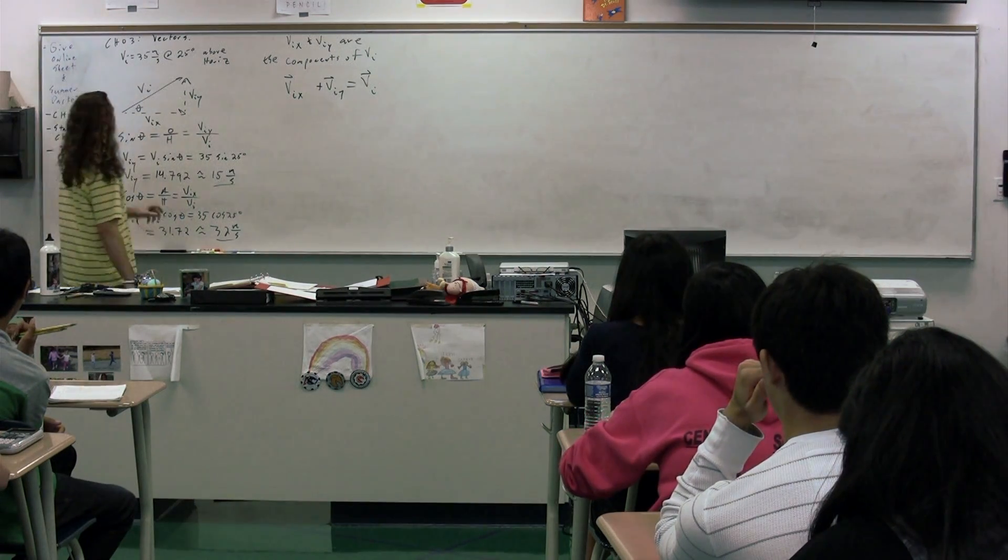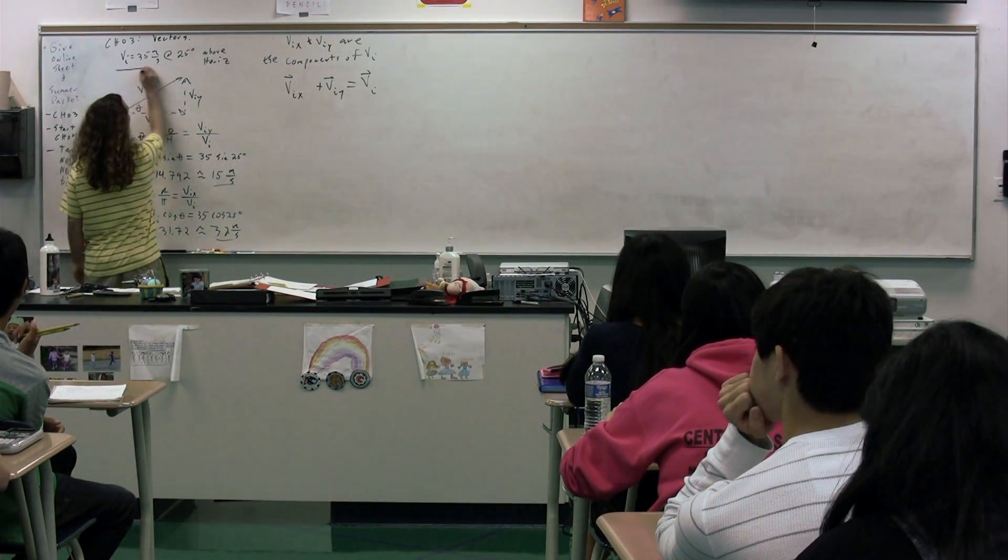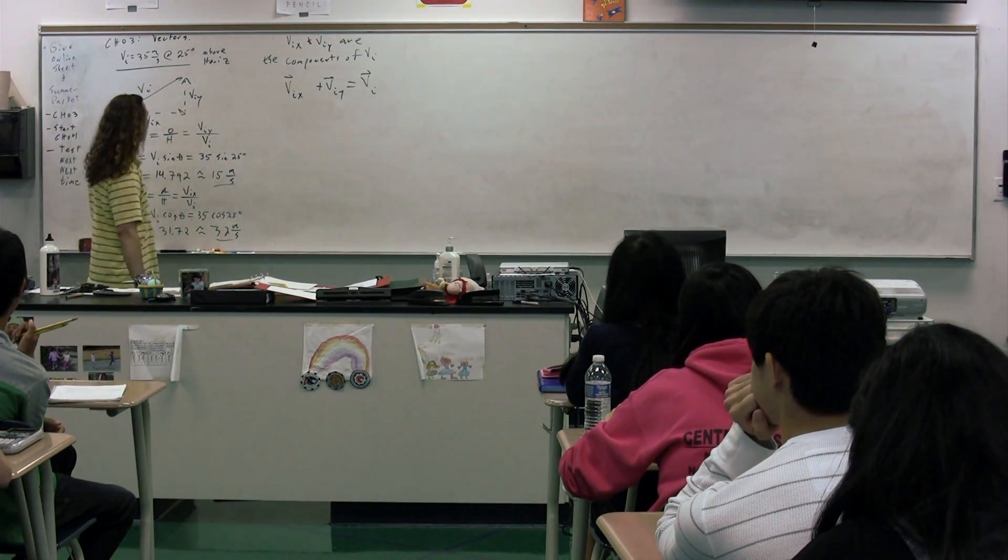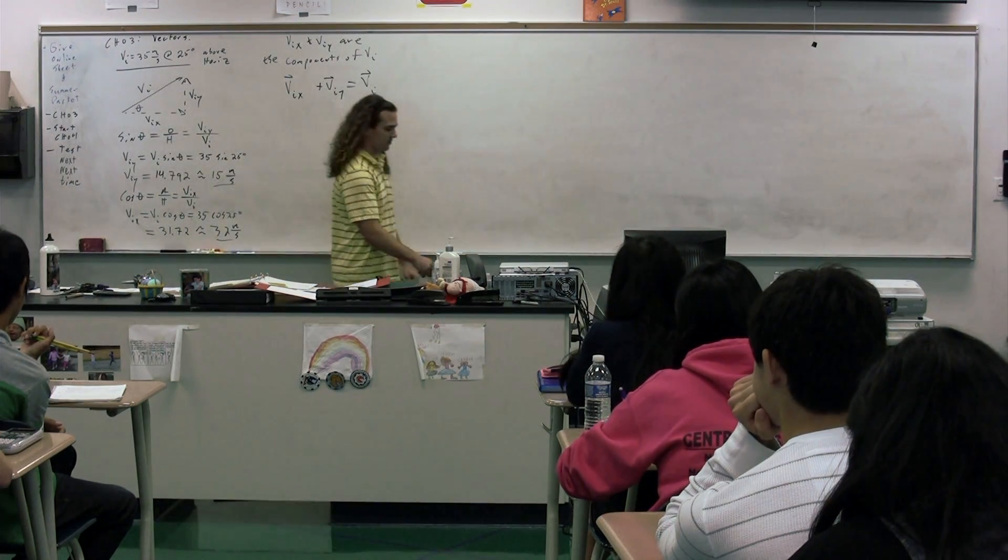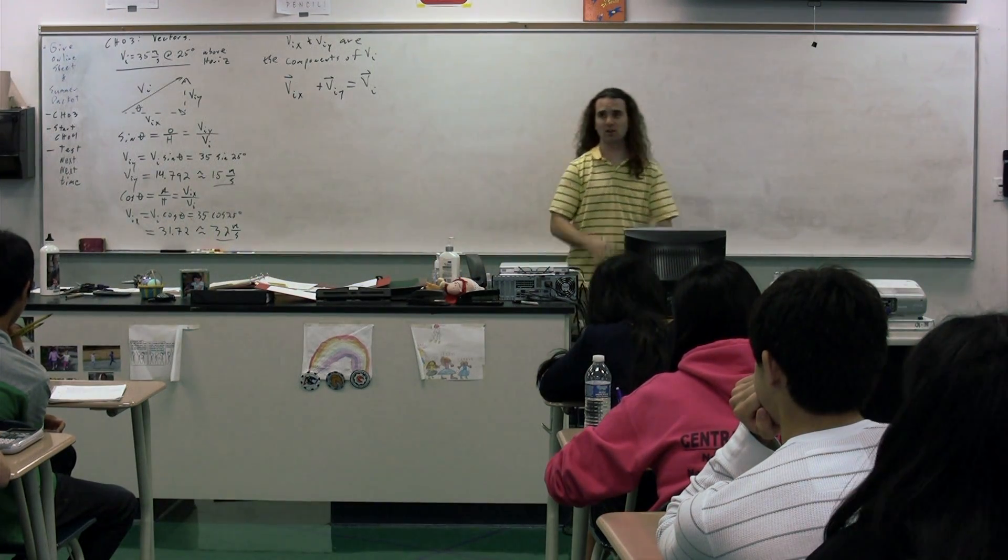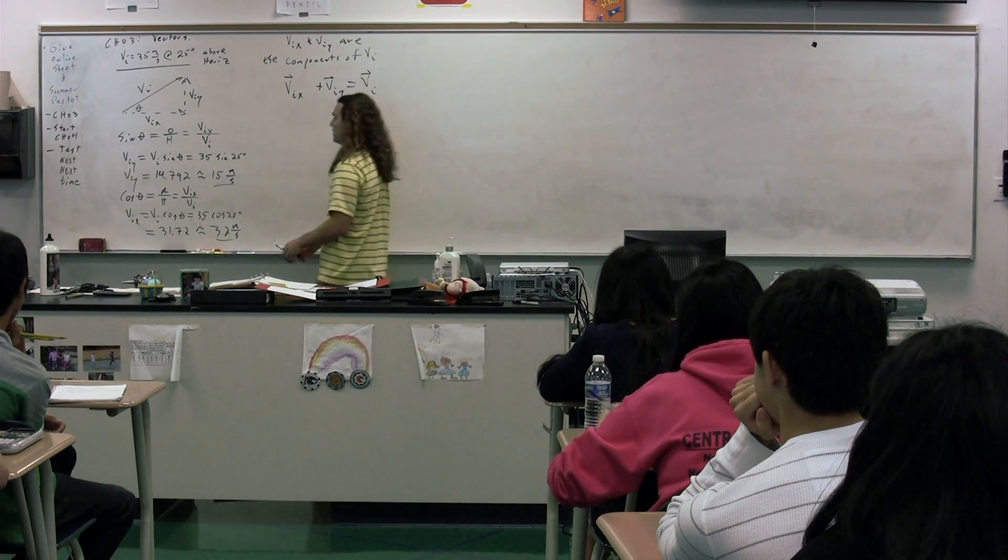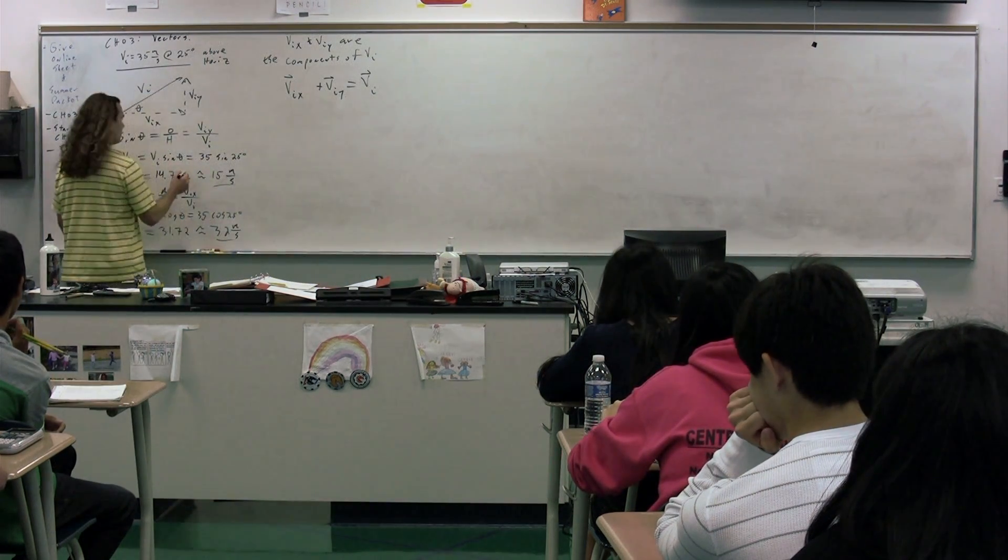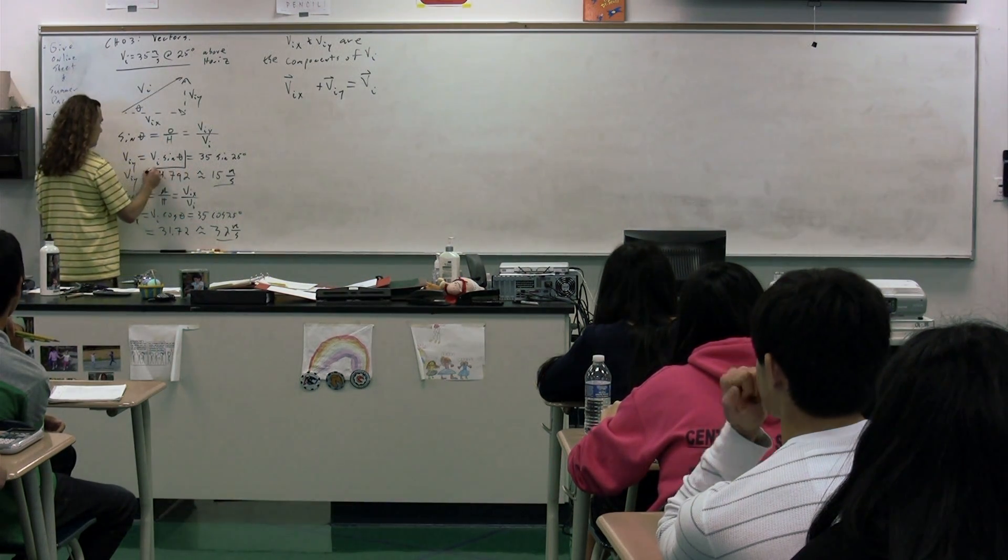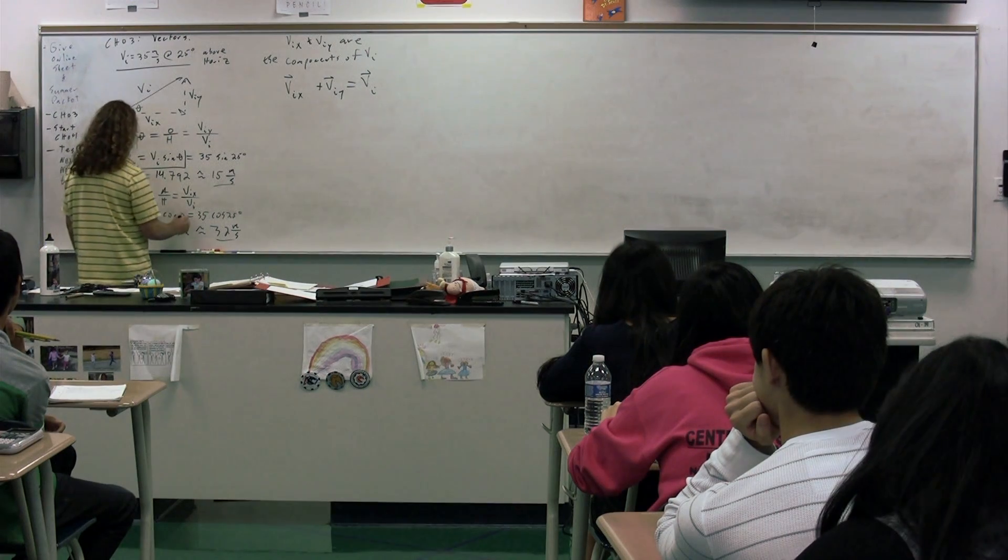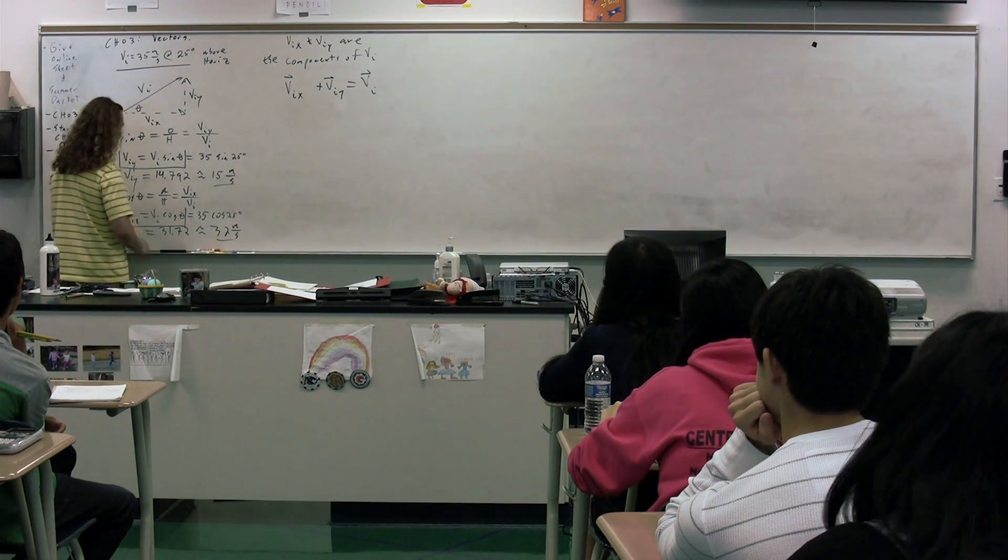Great. So this is one way to illustrate the velocity vector, 35 meters per second at an angle of 25 degrees. And we're going to break these things into components many, many times.